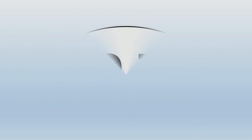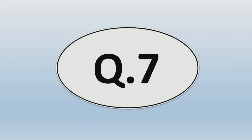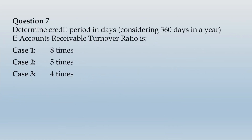We now take up question number 7 from your book. It says: determine credit period in days, considering 360 days in a year, if accounts receivable turnover ratio is — case 1: 8 times, case 2: 5 times, case 3: 4 times. This is a very simple situation. You simply convert the ARTR information into credit period in number of days. The numerator will be 360 days and the denominator will be the accounts receivable turnover ratio.